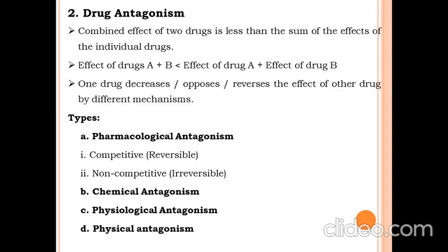Types of drug antagonism: the first is pharmacological antagonism, which is further classified into two types — competitive or reversible type, and non-competitive or irreversible type. The second is chemical antagonism. The third is physiological antagonism. And the fourth is physical antagonism.